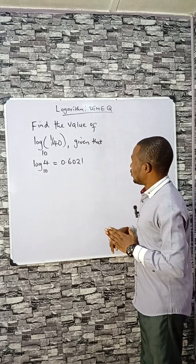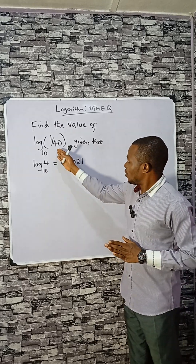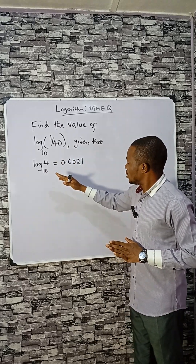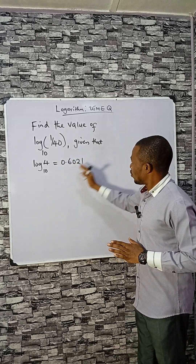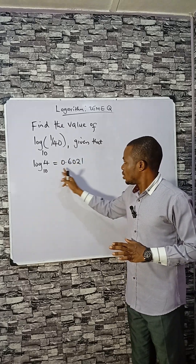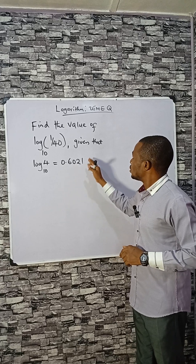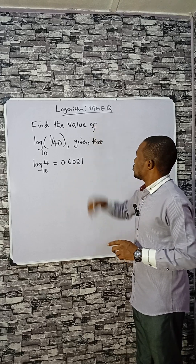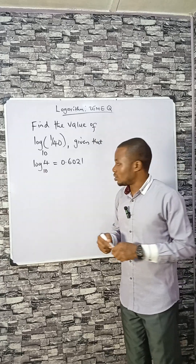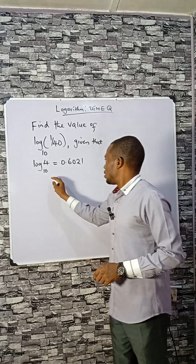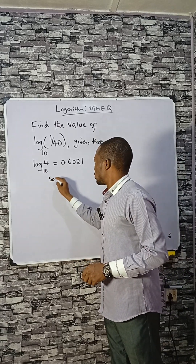Let's find the value of log 1 over 40, given that log 4 is 0.6021. This is a UTMU practice question. Solution: